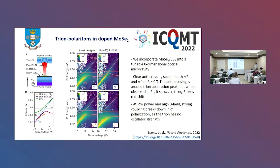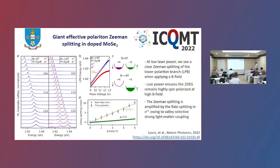In sigma-minus, the cavity mode essentially travels straight through the resonances, whereas in sigma-plus we get a large opening of the Rabi splitting. To compare the two LPBs, we form a waterfall plot as a function of piezo voltage, which controls the cavity length — as we increase piezo voltage, we decrease the cavity length and tune the cavity mode to higher energies. At zero Tesla, both sigma-plus and sigma-minus act the same way. At eight Tesla, sigma-plus gets pinned by our exciton resonance, whereas sigma-minus continues straight through the trion resonance.